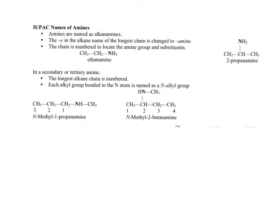Based on the IUPAC naming system for amines, we name based on the longest alkane chain, drop the -e, and add -amine to the ending. For example, a longest chain of two carbons would be ethane — drop the -e — giving ethanamine. Here, the longest chain is propane, and the nitrogen comes off of carbon two, so we would call this 2-propanamine.